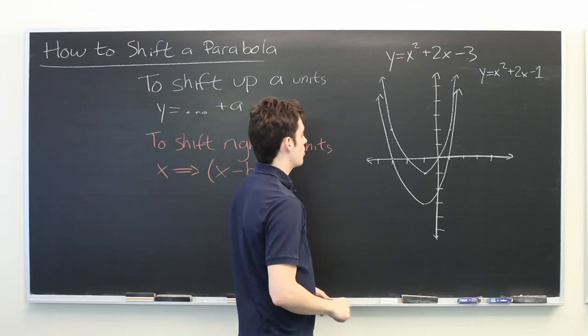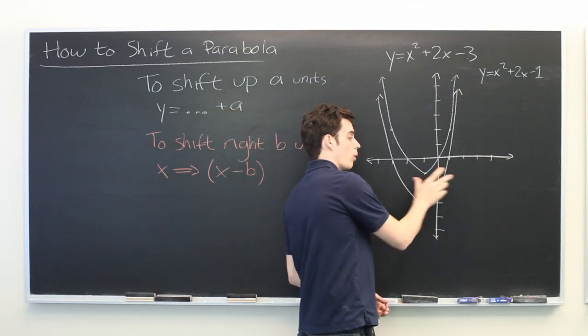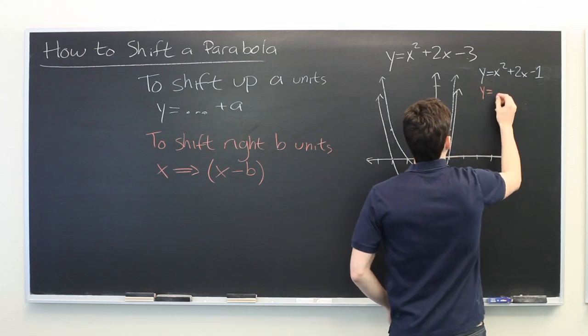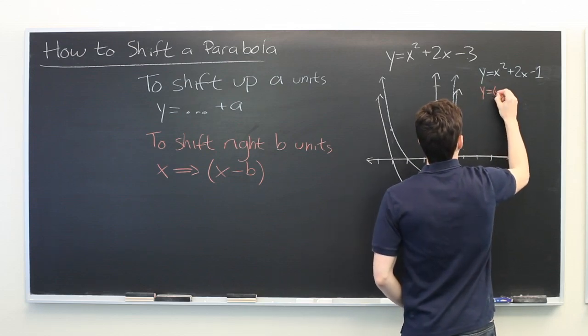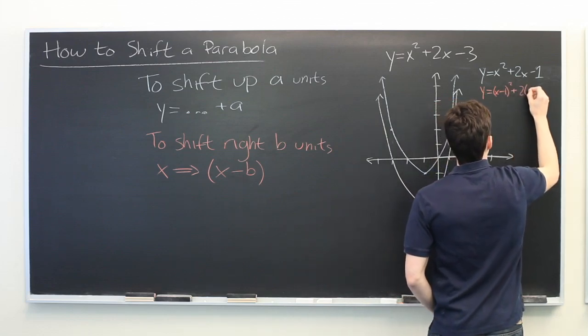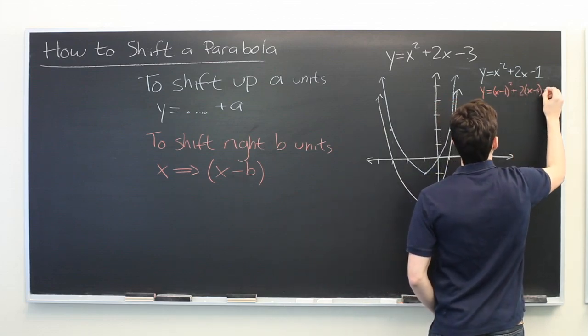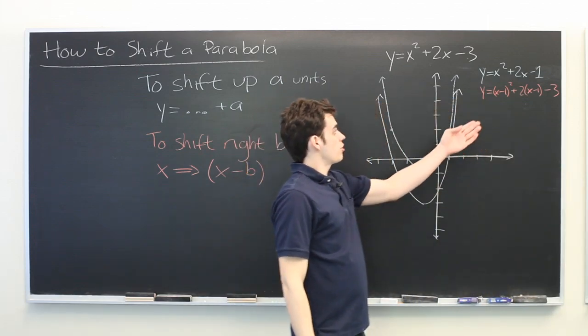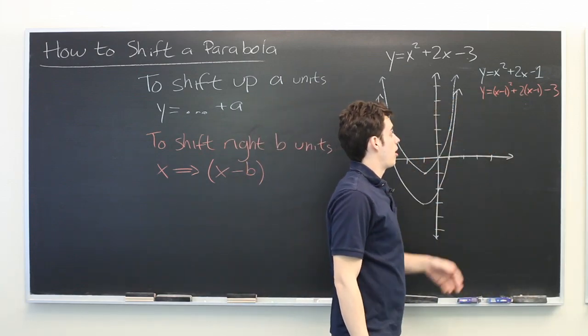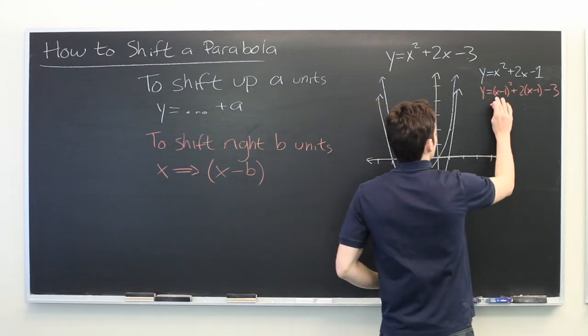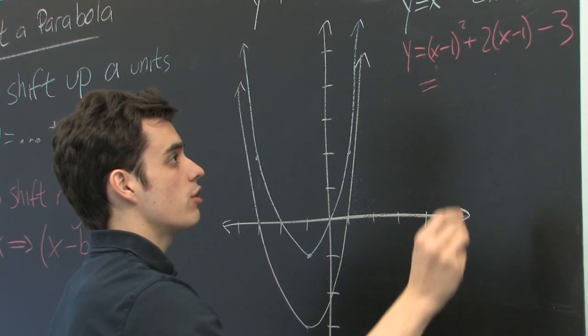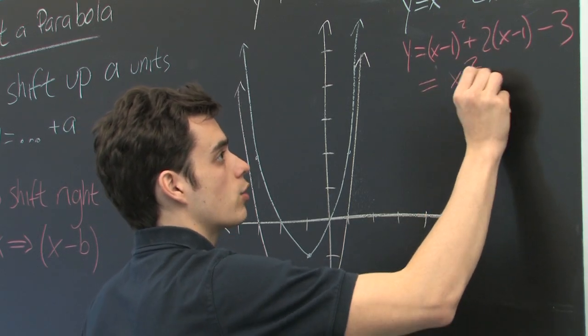So let's say that we want to shift this one unit to the right. Well, we can rewrite this as y equals x minus 1 squared plus 2 times x minus 1 minus 3. This is a perfectly valid way of stating the parabola. But if you want to simplify it a little bit, you can square this, distribute this 2. And what you'll eventually end up with is x squared minus 4.